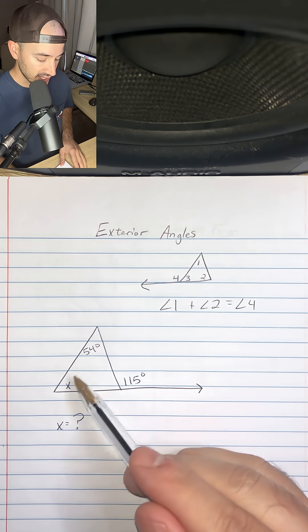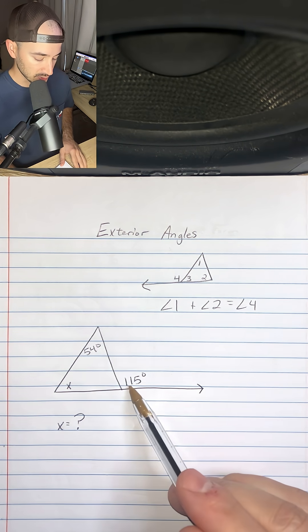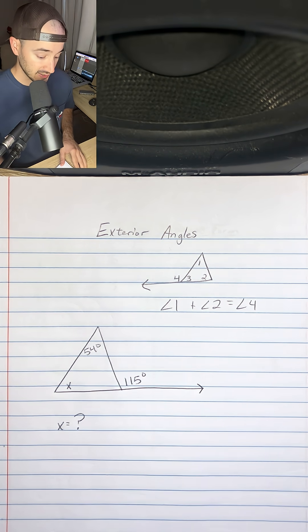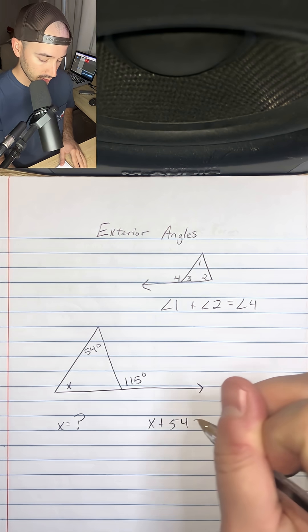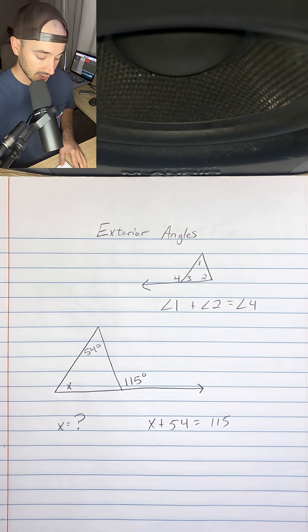So these two angles have to add up to this angle, which is 115. So I can just make an easy equation: x plus 54 is equal to 115. And then I can just solve for x.